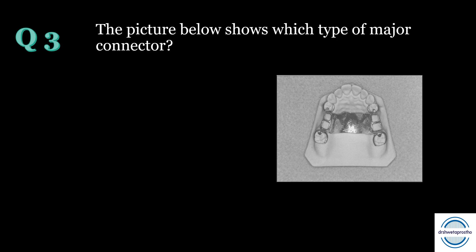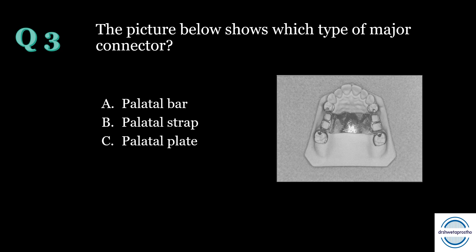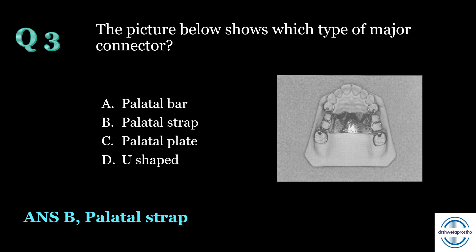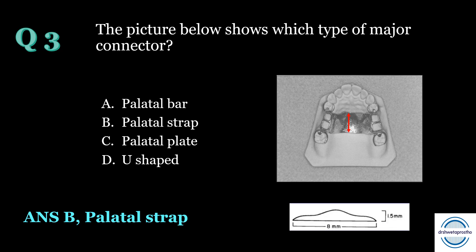Question number three: the picture below shows which type of major connector? A. Palatal bar, B. Palatal strap, C. Palatal plate, D. U-shaped major connector. The answer is B, palatal strap. A palatal strap is a wide band of metal with a thin cross-sectional dimension. It has a minimum width of 8 mm and 1.5 mm in thickness. The thicker area is in the central area, which increases its rigidity. The link is given in the description box.